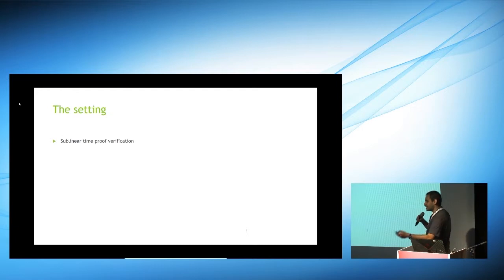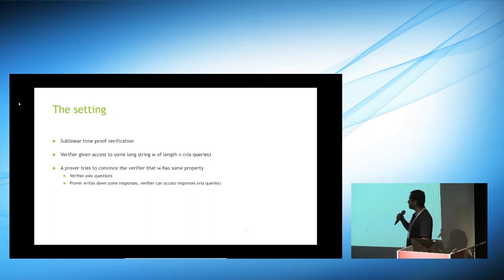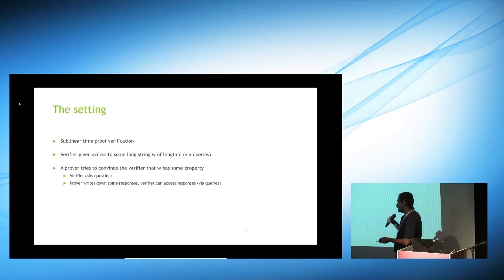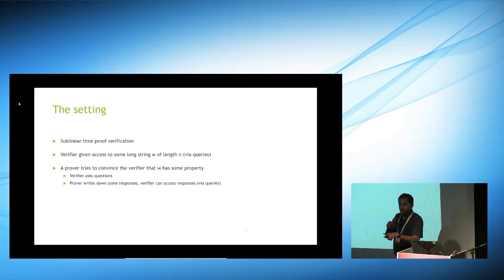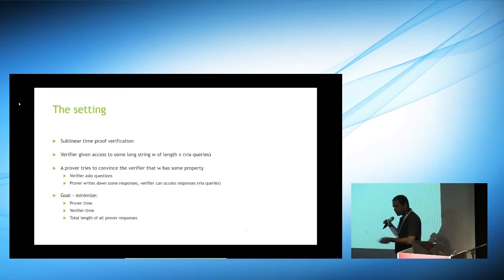The setting is sublinear time proof verification. There's some long string w and a verifier who wants to be convinced of some property of w. There's a prover trying to do this convincing. The verifier runs in sublinear time, so it doesn't have enough time to see all of w, yet the prover still wants to convince the verifier that this string has some property. The verifier asks some questions, the prover writes something down, and the verifier can access a few locations of what was written. We measure prover time, verifier time, and total length of all prover responses — which corresponds to total proof length in an eventual STARK proof.